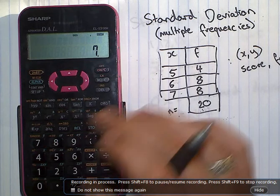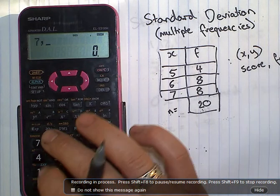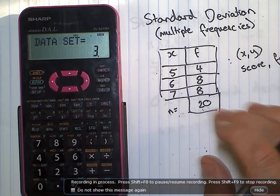Seven occurs eight times. M plus. Three sets of data entered in.